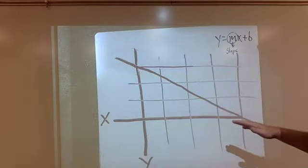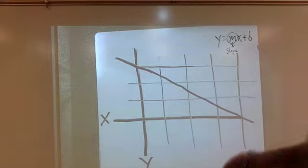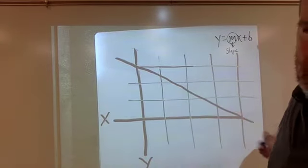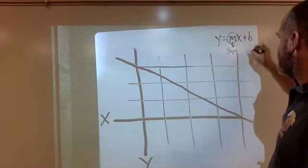So you have to, on this test, more than any, eliminate wrong answers first. Because look at the line. It's going down from left to right. That means your M, your slope, is going to be negative.